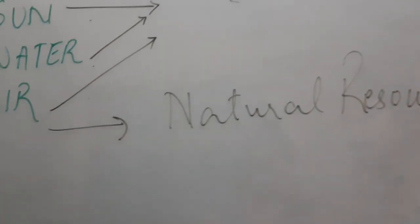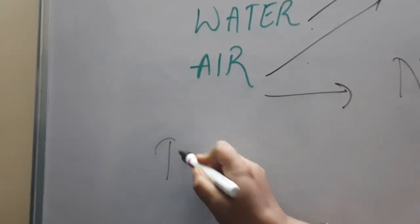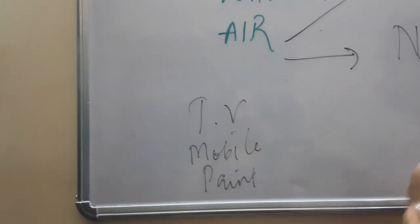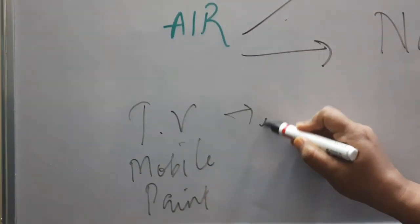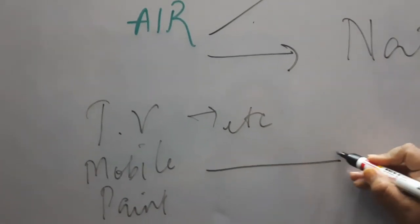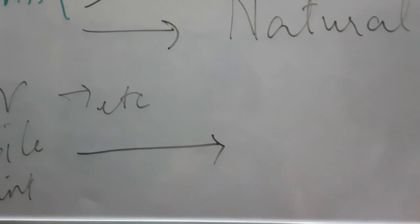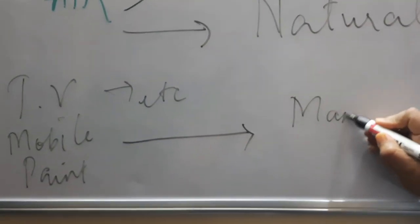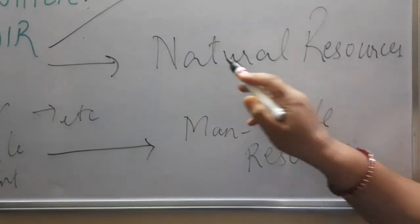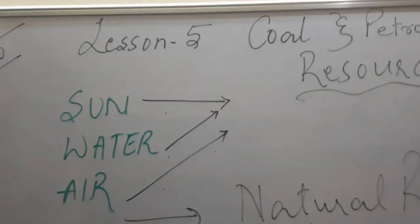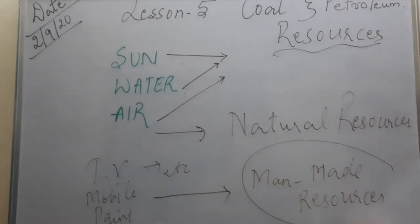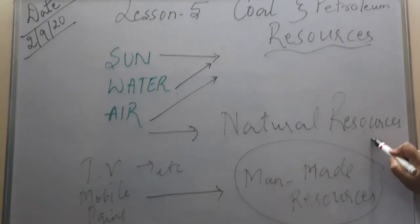Nowadays we also require television, mobile phones, paints to do painting of our house, and many more things. These are also resources — things which are our requirement — but they are not found in nature as such. They have been made by man's effort. So resources found in nature are known as natural resources, and resources made by man through his effort are known as man-made resources.